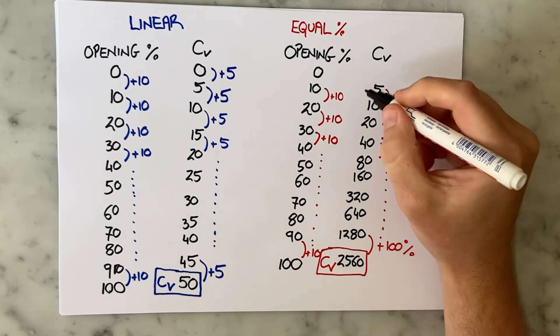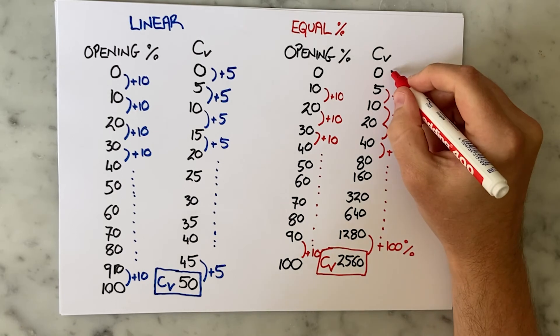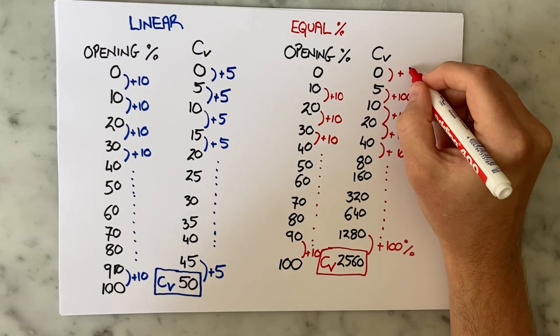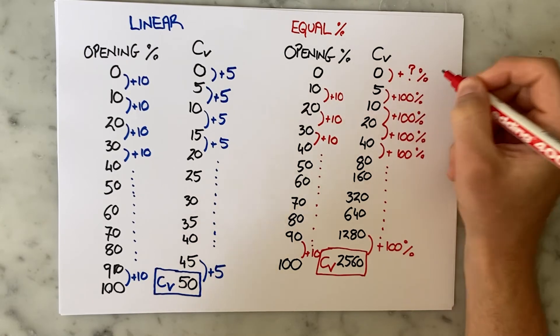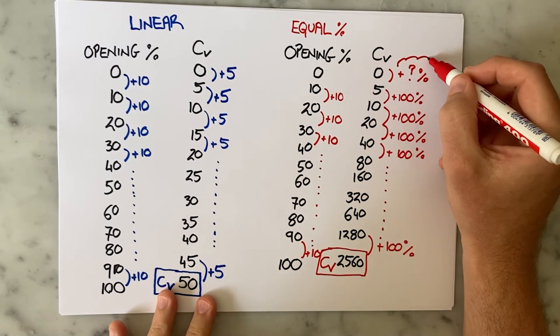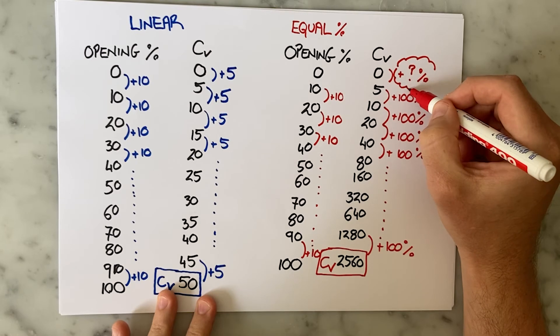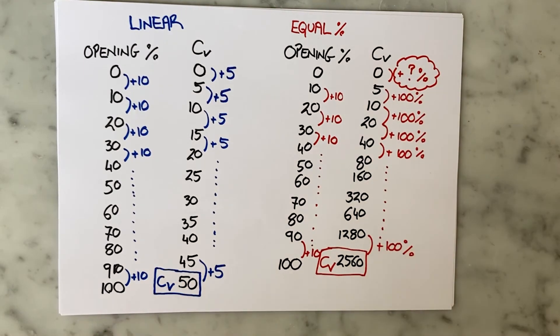For the linear valve all I had to do was add 5. But what do I do for the equal percentage valve? If the flow rate is 0 and I say OK I'm opening up to 10%, I need the flow to increase by 100% to carry on with the pattern. But 100% of 0 is still 0, so that doesn't help. That is why I couldn't start at 0%.